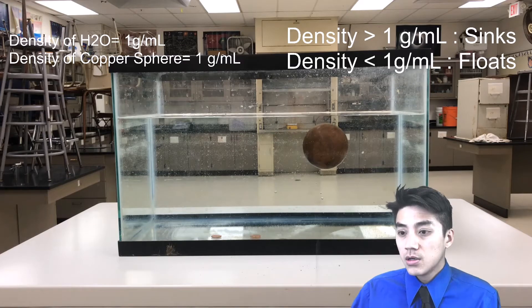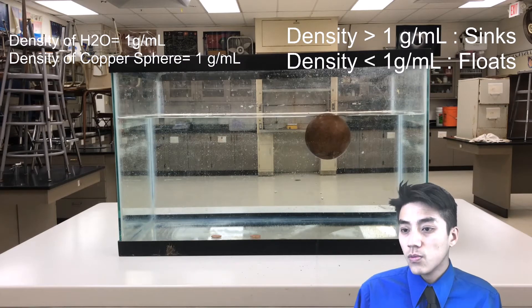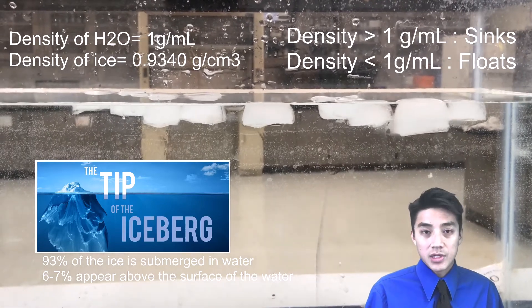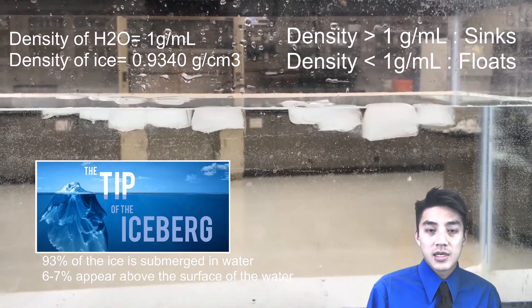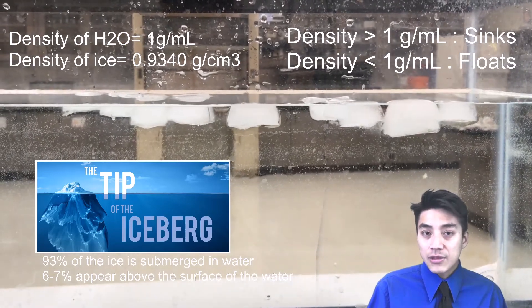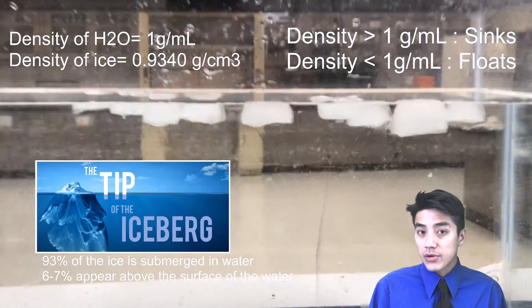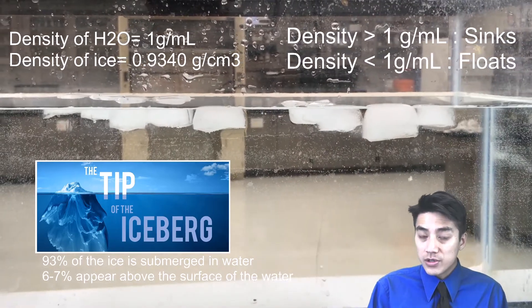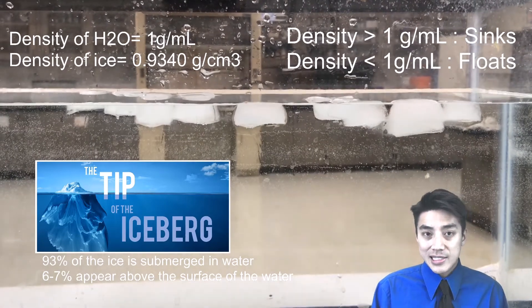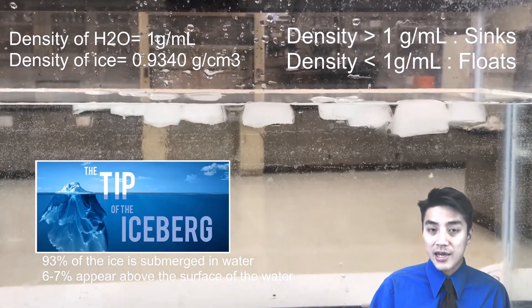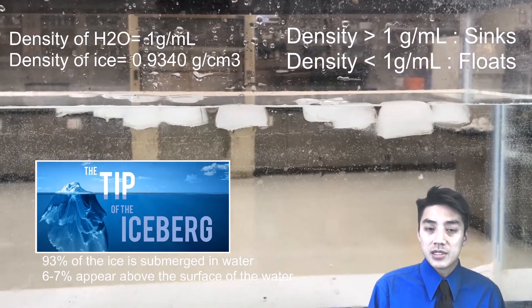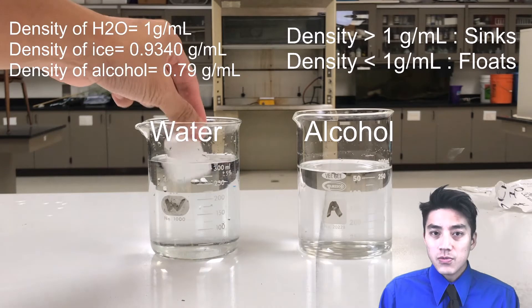If you've ever heard the expression, the tip of the iceberg, it actually relates to the density of water and ice. Because ice has a density of 0.93, it's 93% of that of water. You can see that 93% of the ice's volume and mass is actually submerged below the surface of the water, whereas 6-7% of it is actually sticking out. It's above the surface of the water. That's where the expression comes from, the tip of the iceberg.